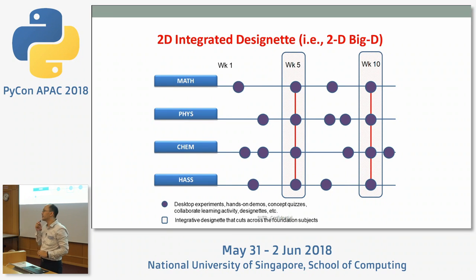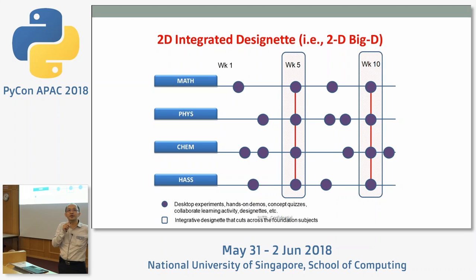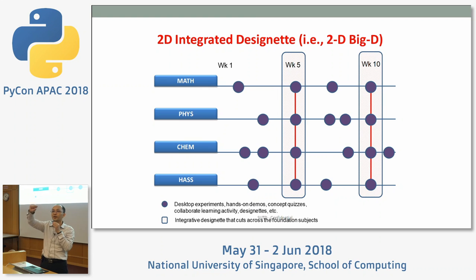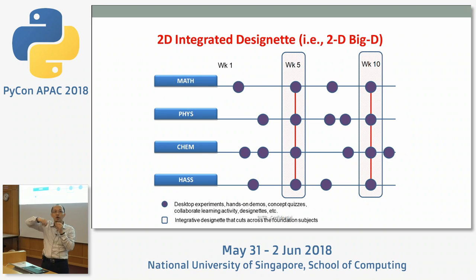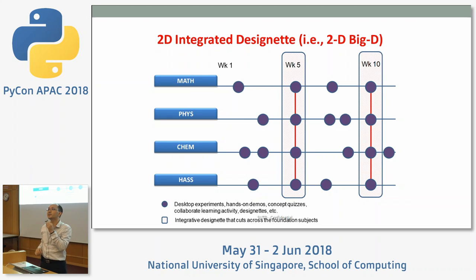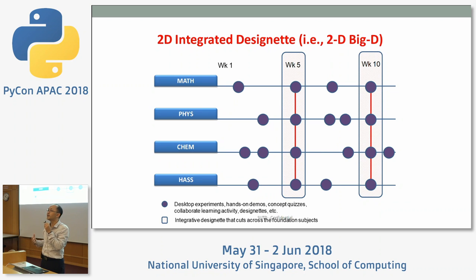One way SUTD does this is through what we call 2D integrated design. We have 1D, 2D, 3D, and 4D design. The 1D design involves mini projects specific to one subject. But in 2D, we have a common project that is cross-subjects, and the assessment is also cross-subjects. For example, a computing and physics assignment might each be worth 10% of their respective courses. We find this is one way to help students see that computing is actually everywhere.